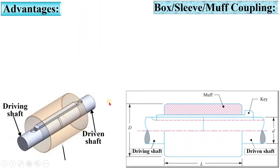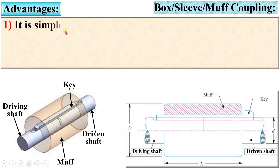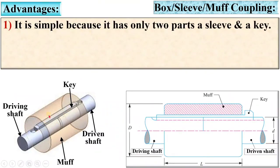Now advantages of the box coupling. First, it is simple because it has only two parts: the Sleeve and the key to transmit the power from Driving Shaft to the Driven Shaft.